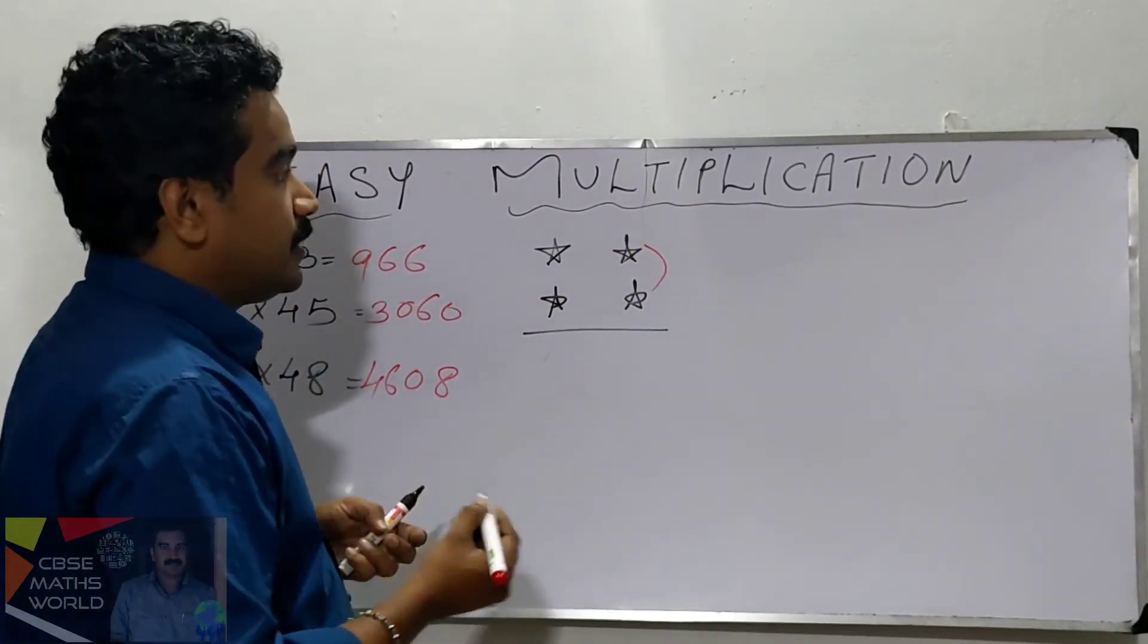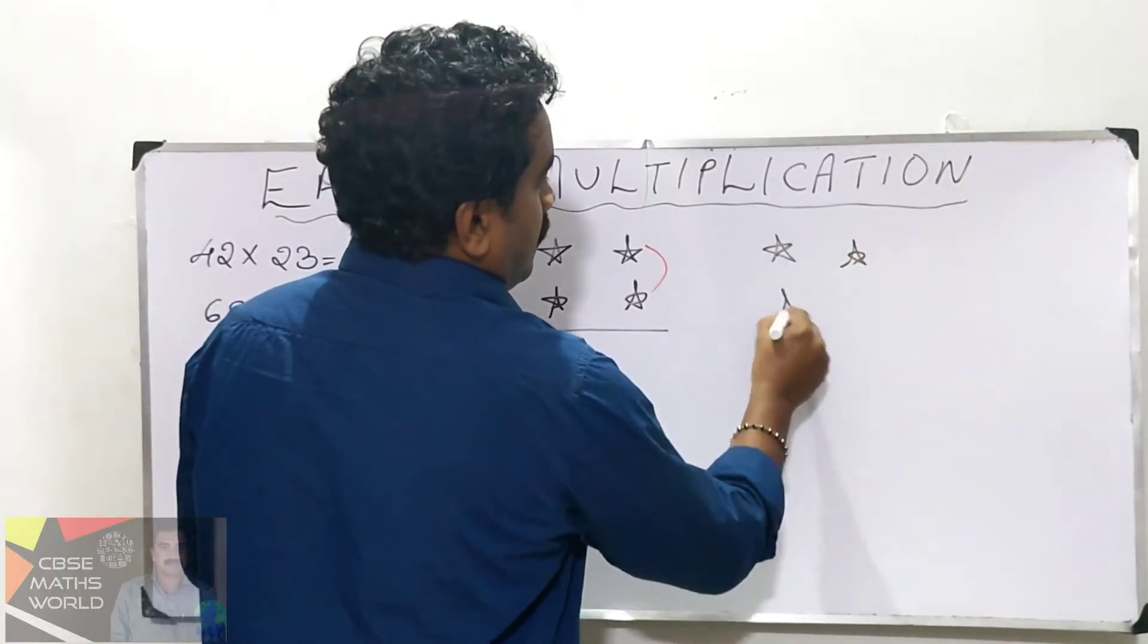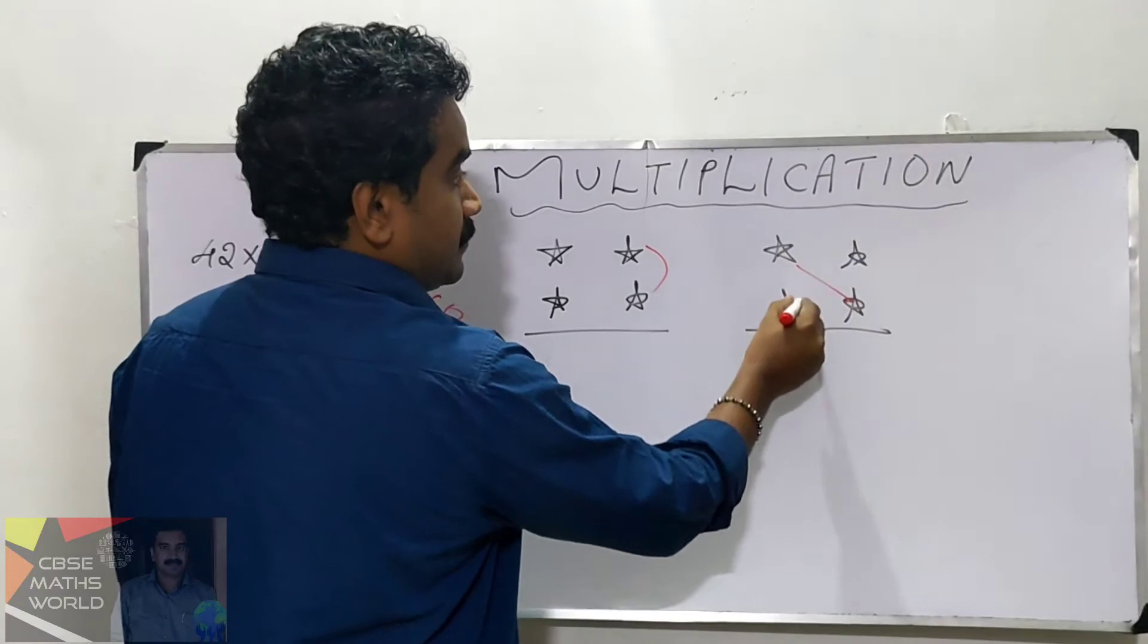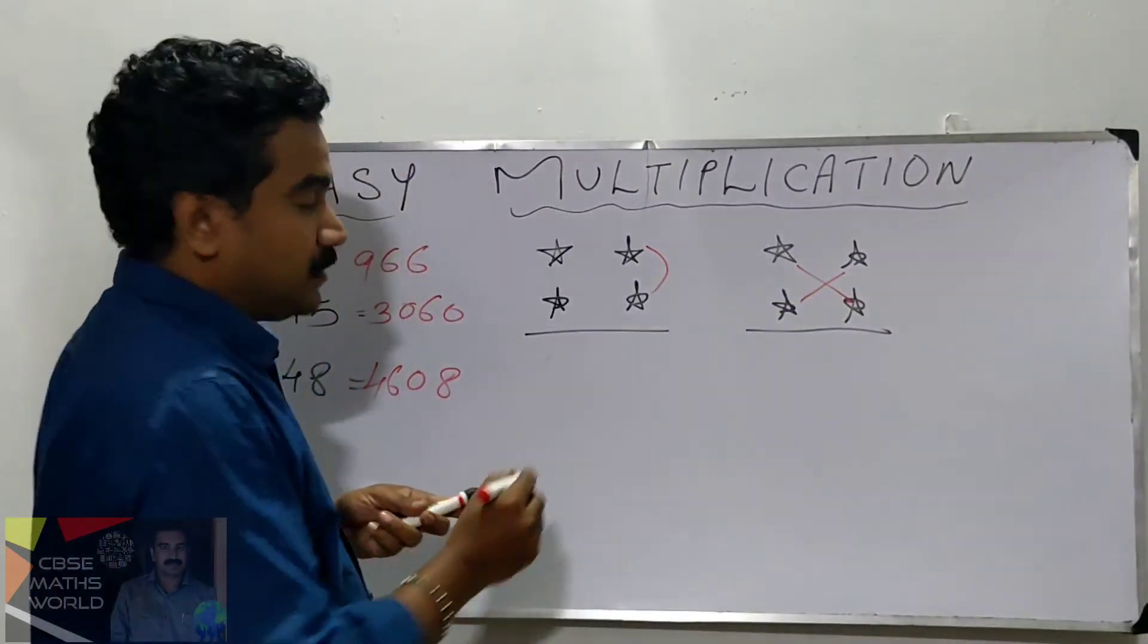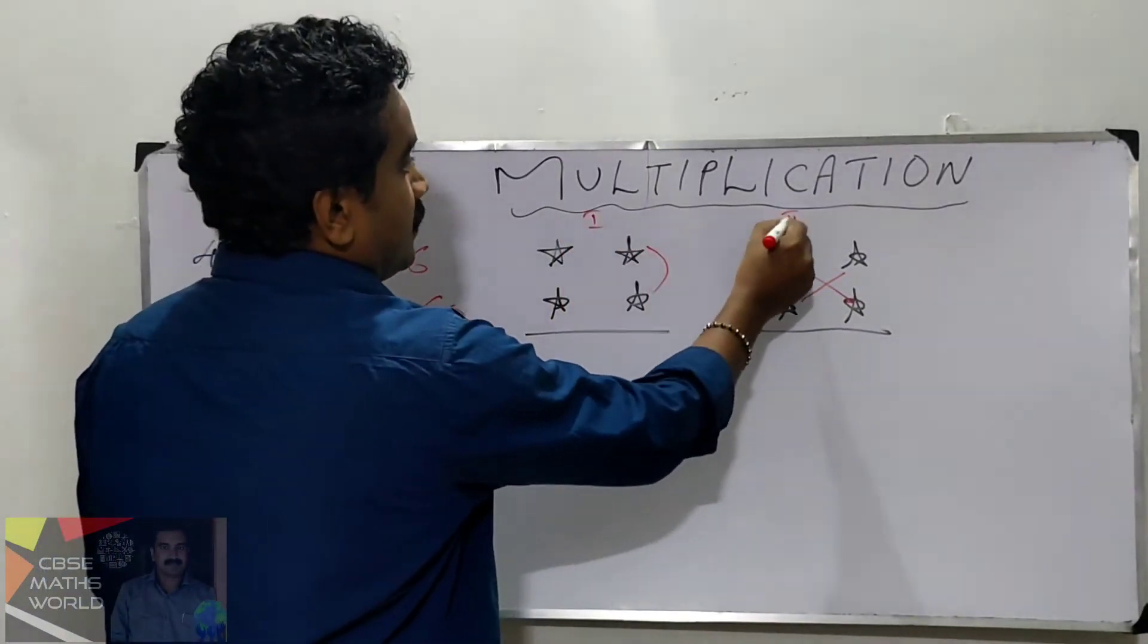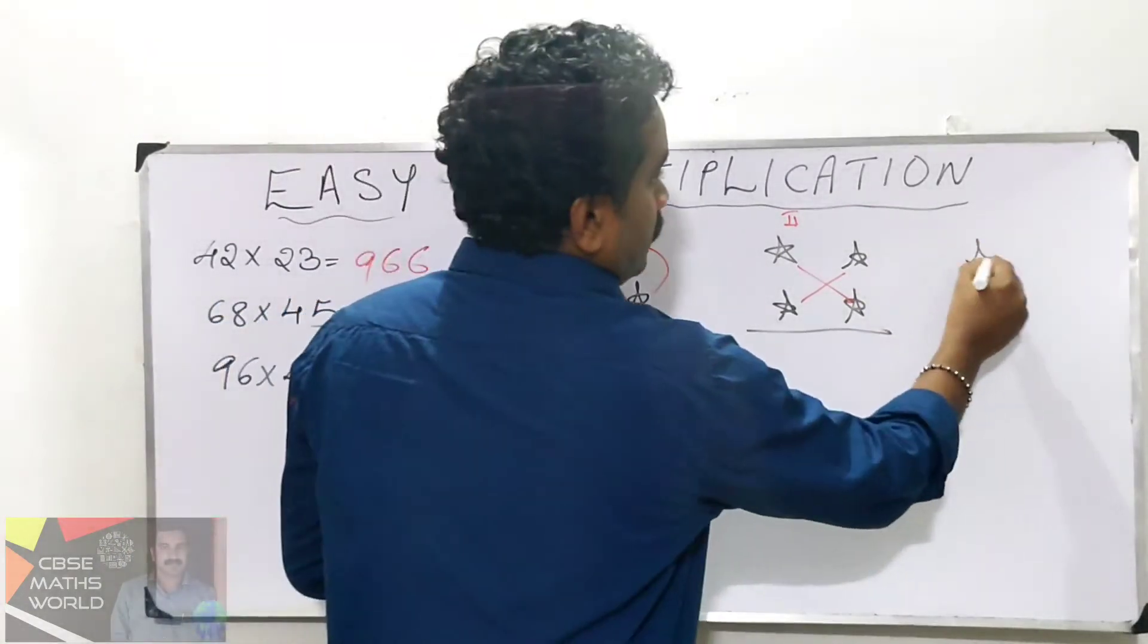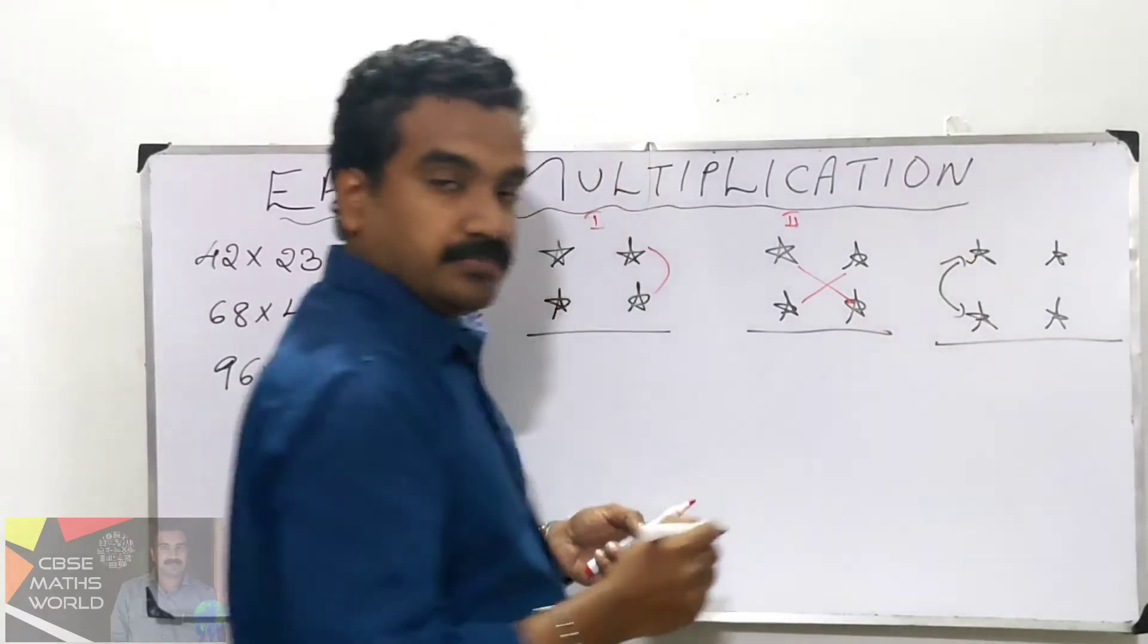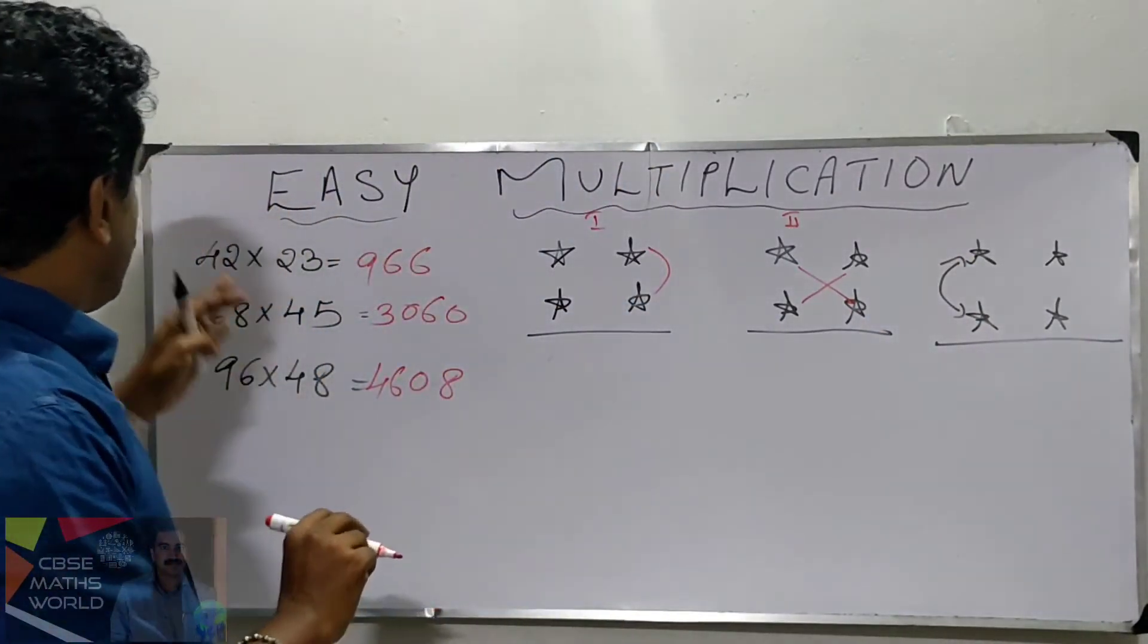The second step, we are cross multiplying and adding. This is the first one and this is the second one. The third one, we are multiplying these two. This is the technique.